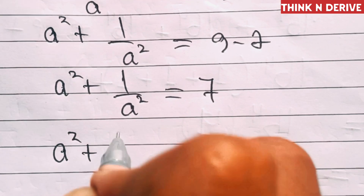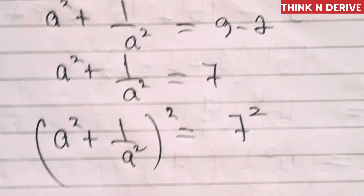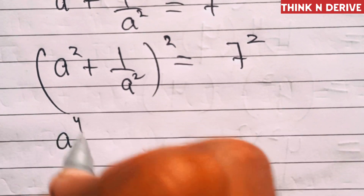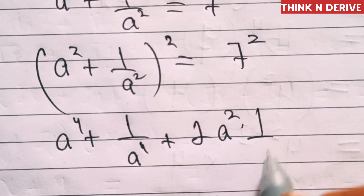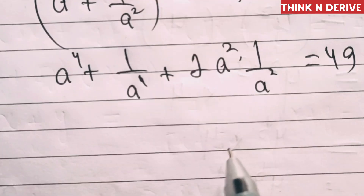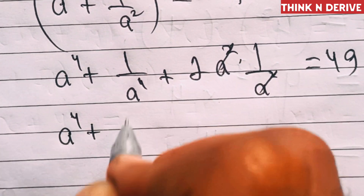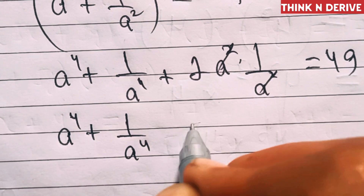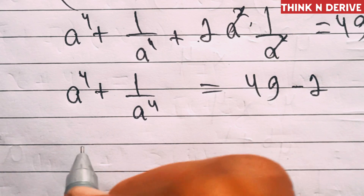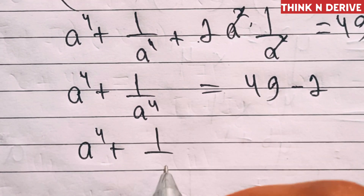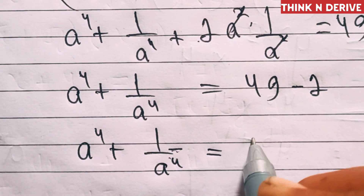Now squaring a² + 1/a² = 7 on both sides: (a² + 1/a²)² = 49. This gives a⁴ + 1/a⁴ + 2(a²)(1/a²) = 49. Since a² and 1/a² cancel, we get a⁴ + 1/a⁴ + 2 = 49, so a⁴ + 1/a⁴ = 47.